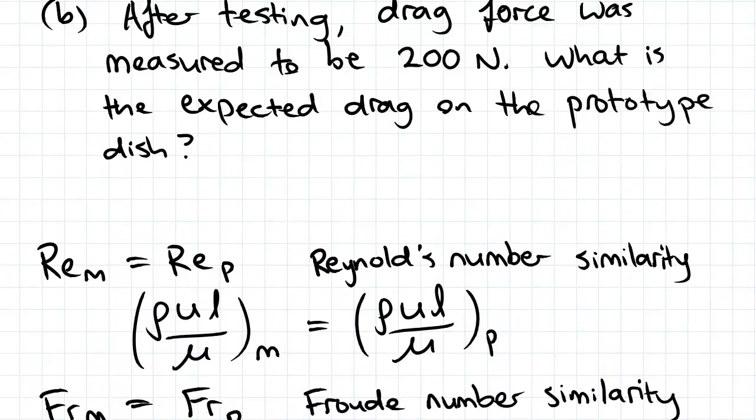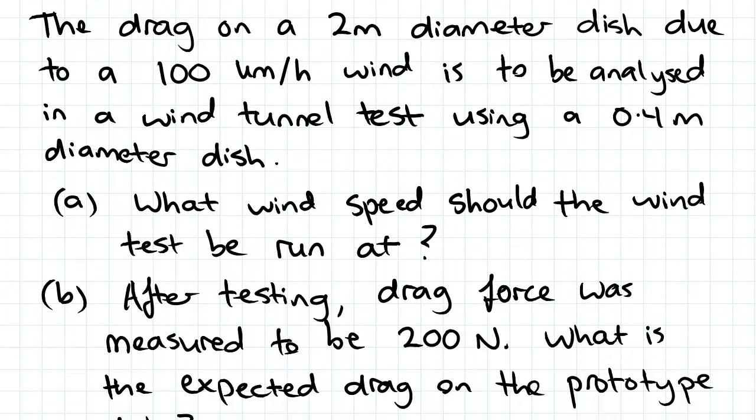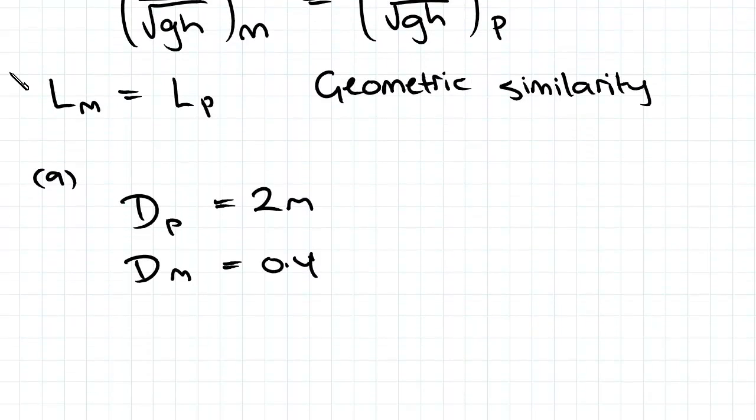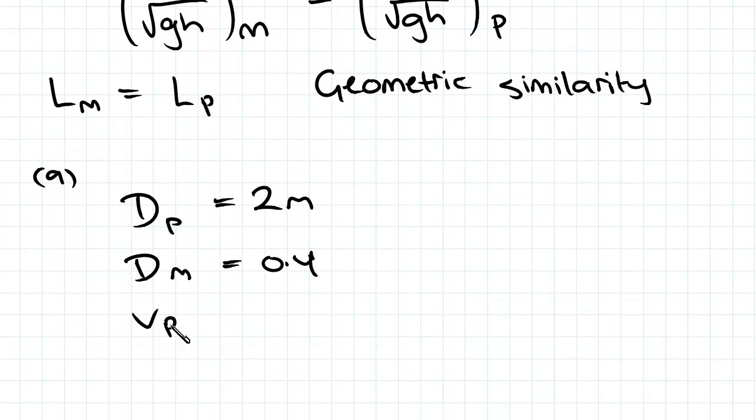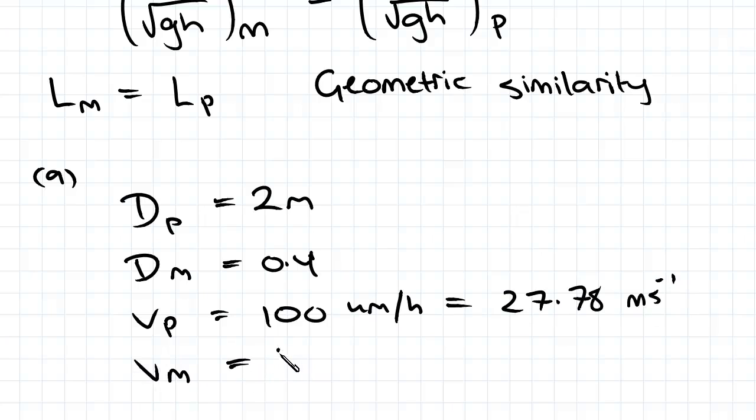And we've also been given VP, the velocity of the prototype, which is 100 km per hour. We've been asked to find VM, the model velocity. So VP is 100 km per hour, which is 27.78 m per second.